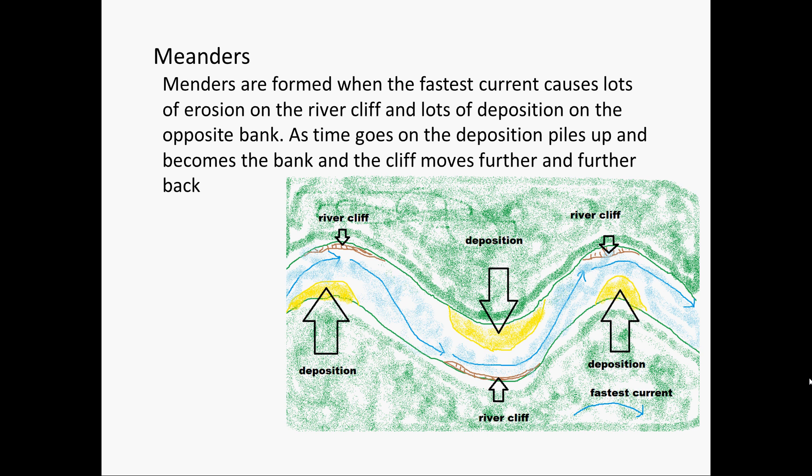Meanders are formed when the fastest current, the blue line, causes lots of erosion on the river cliff and lots of deposition on the opposite bank. As time goes on, the deposition piles up and the erosion on the other side gets stronger, and the bank and the cliff move further and further back. As you can see from this diagram.